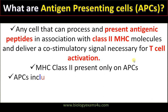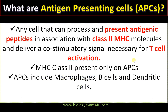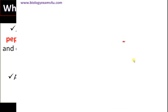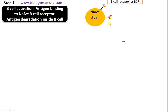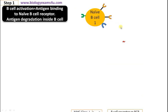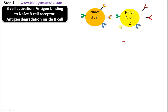APCs include macrophages, B cells, and dendritic cells. Let us take the example of a B cell as an antigen presenting cell. This is B cell 1, having a B cell receptor, MHC class 1 — which is present on all nucleated cells — and MHC class 2, which is present only on antigen presenting cells. So the presence of MHC class 2 makes it an antigen presenting cell.